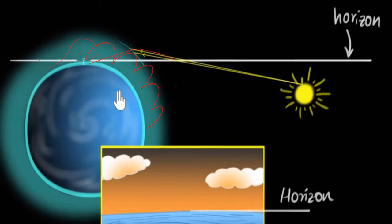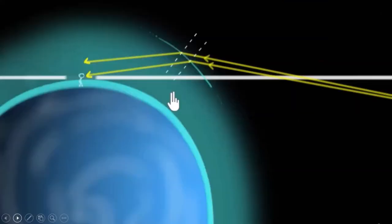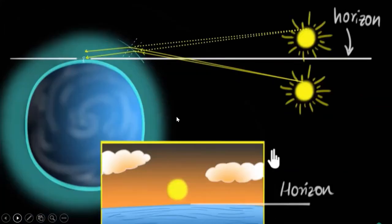When the light rays bend and come to us, do we see them as bent? No — we perceive the light rays as coming directly. This is the image of the Sun which we see. Though the Sun is actually below the horizon, we are still able to see it. Whatever Sun we see is not the actual Sun; it is the apparent position of the Sun, just as we studied for stars.